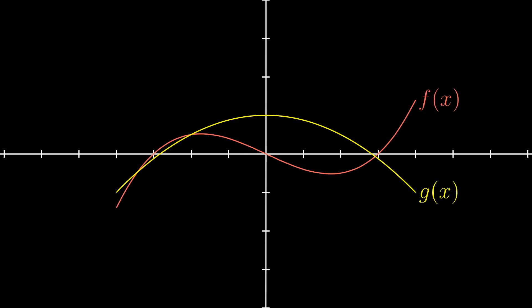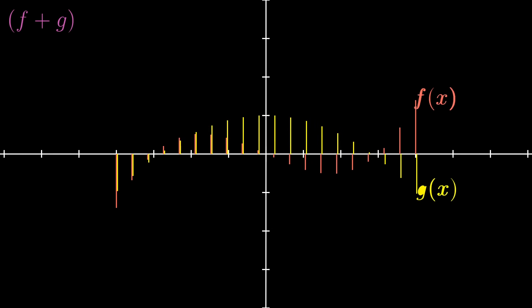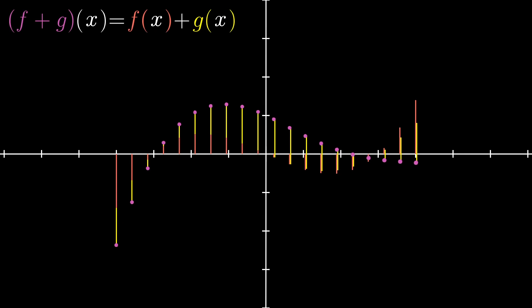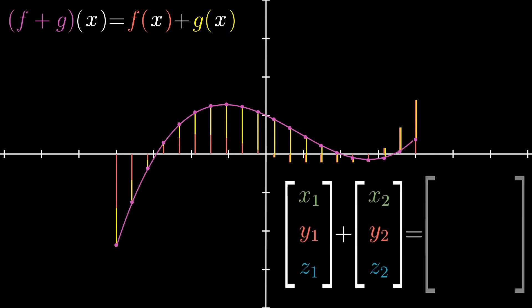In the same way that you can add two vectors together, there's also a sensible notion for adding two functions, f and g, to get a new function, f plus g. It's one of those things where you kind of already know what it's going to be, but actually phrasing it as a mouthful. The output of this new function at any given input, like negative 4, is the sum of the outputs of f and g when you evaluate them each at that same input, negative 4. This is pretty similar to adding vectors coordinate by coordinate. It's just that there are, in a sense, infinitely many coordinates to deal with.